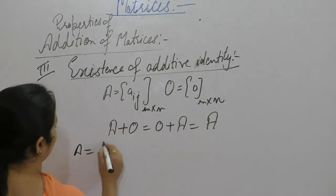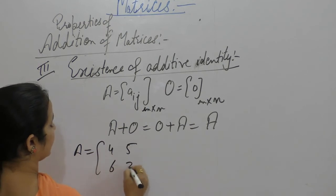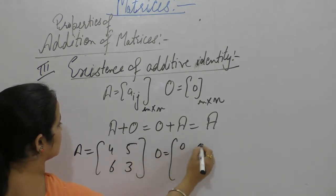Let A be [4, 5; 6, 3] and null matrix O be [0, 0; 0, 0].